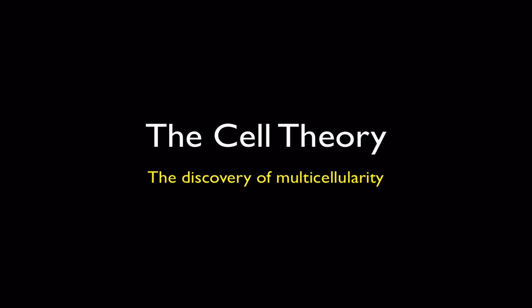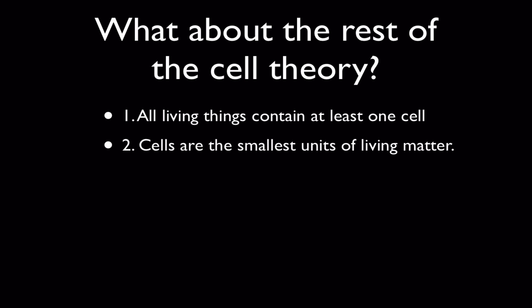This is the fourth videocast in our series on the cell theory, and in this videocast we're going to focus on the discovery of multicellularity — which is a fancy way of saying scientists figured out that all living things, even really big things like plants and animals, are built from collections of cells arranged as tissues. We've spent the first three videocasts talking about cells coming from pre-existing cells. Now we're going to look at the first two ideas of the cell theory: that all living things contain at least one cell, and that cells are the smallest units of living matter.